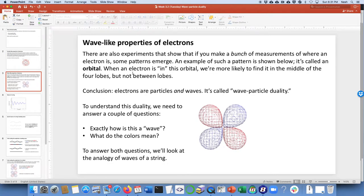On the other hand, there are also experiments that show that if you take a bunch of measurements of where an electron is, some patterns begin to emerge. An example of a pattern is shown below. We have called this sort of thing an orbital. The way we interpret that is that when an electron is in that orbital, we're more likely to find that electron in the middle of those lobes, like there, there, there, or there, but it wouldn't be found in between those lobes.